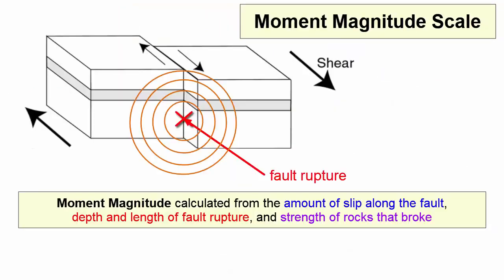As a result, the Moment Magnitude Scale was developed and is the one now used by seismologists around the world. The Moment Magnitude Scale calculates magnitude from amount of slip along the fault, depth and length of fault rupture, and strength of rocks that broke. With this new scale, a magnitude 7.1 from one location represents the same energy release as another location. However, it does take time to gather the data necessary to calculate the Moment Magnitude. As a result, usually after an earthquake, the first magnitude given right away is the Richter Magnitude, based on the seismogram recording, and then a few days or weeks later, that number is refined to the more accurate Moment Magnitude.